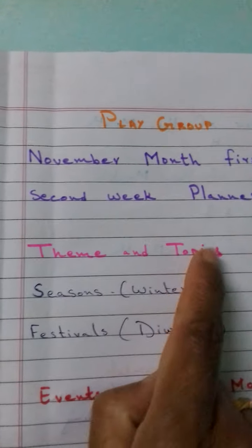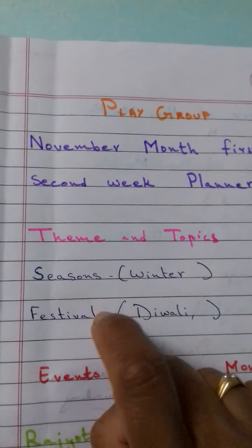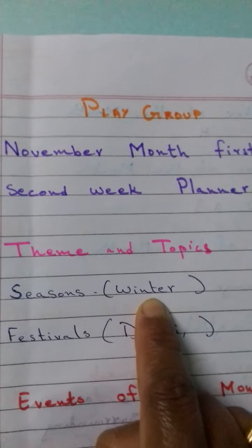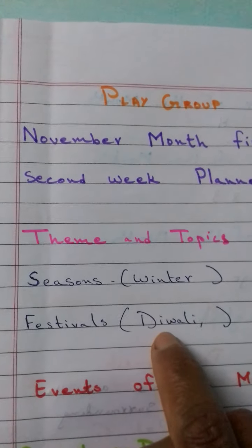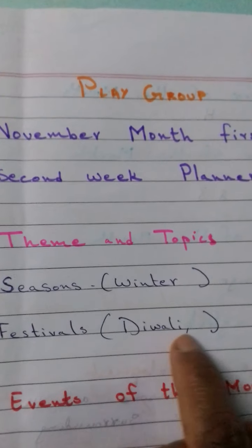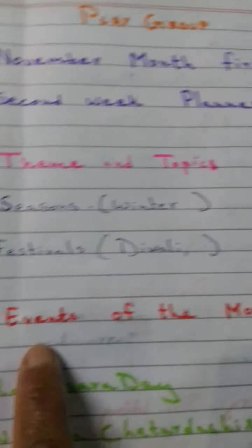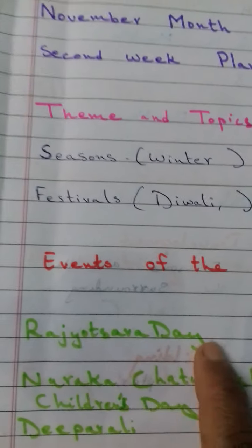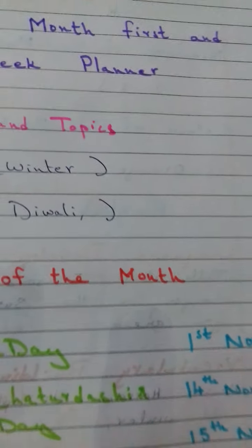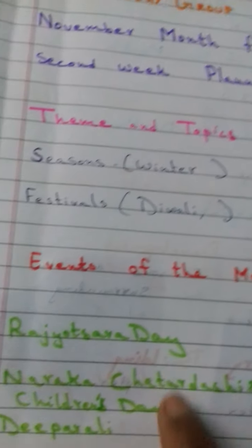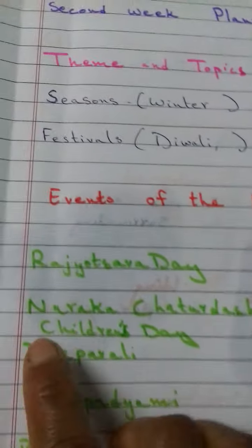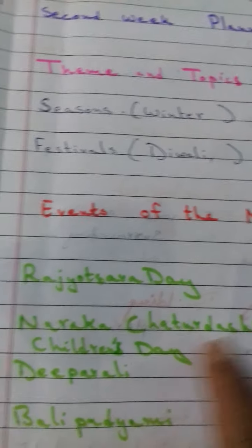The theme and topic for the month is seasons and festivals. In seasons we will discuss about winter and in festivals it's Diwali. Events of the month are Rajyotsava Day, that is 1st November, since I am staying in Karnataka we celebrate Rajyotsava Day. Then Narakka Chaturdasi and Children's Day on 14th November.